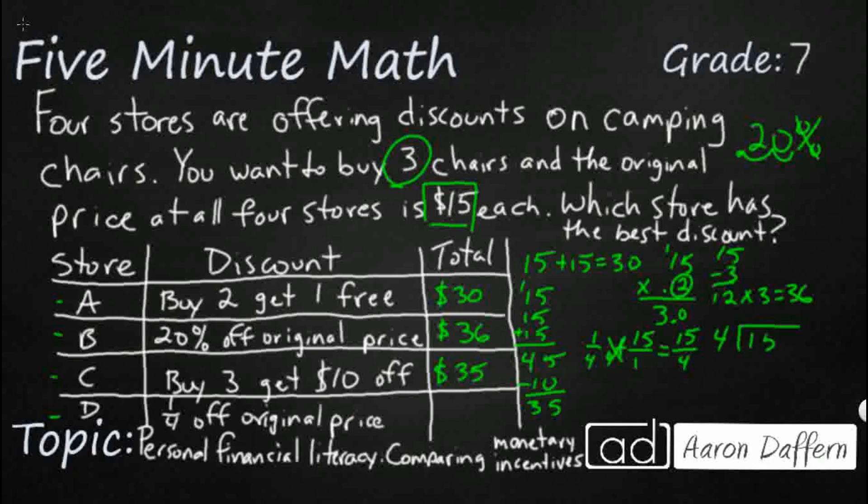So 4 goes into 15 almost 4 times. So it's going to be 3. That's 12. And so let's bring that decimal down. 4 goes into 30. That's going to be 7 times. 28. There we go. Now we're going to finally get that 5. So 1 fourth of 15 dollars is 3.75. So that's how much is off.